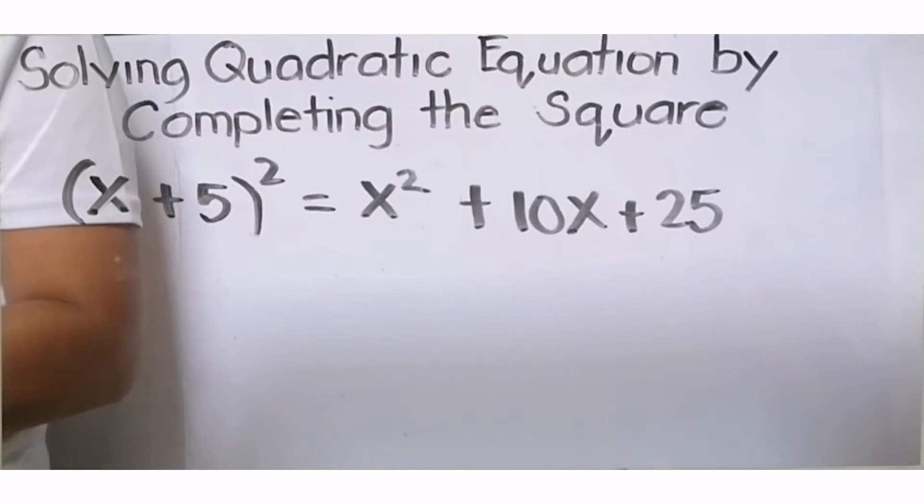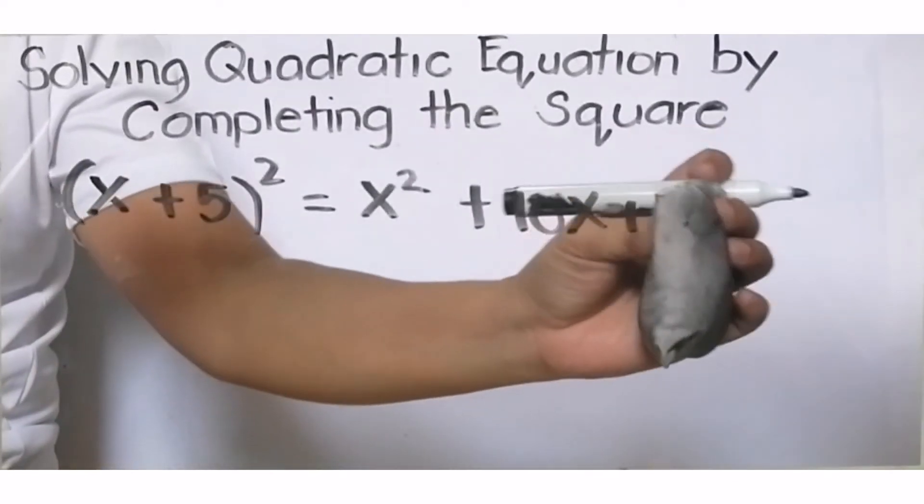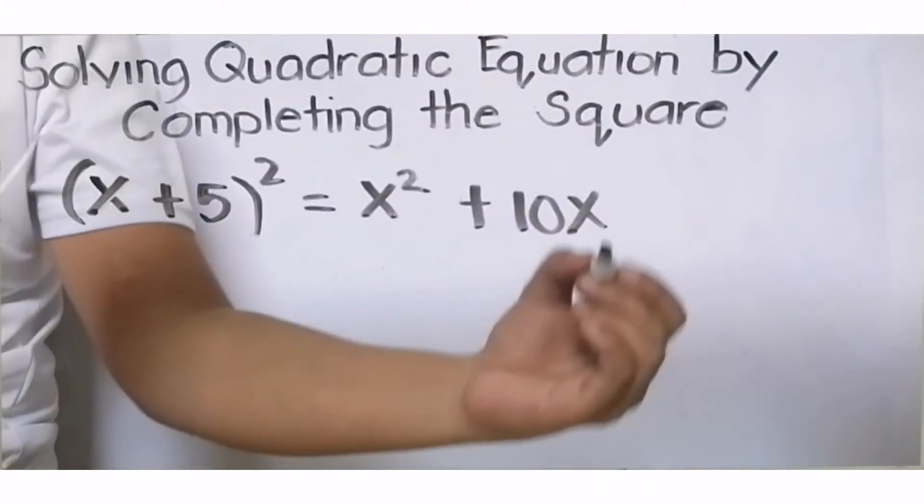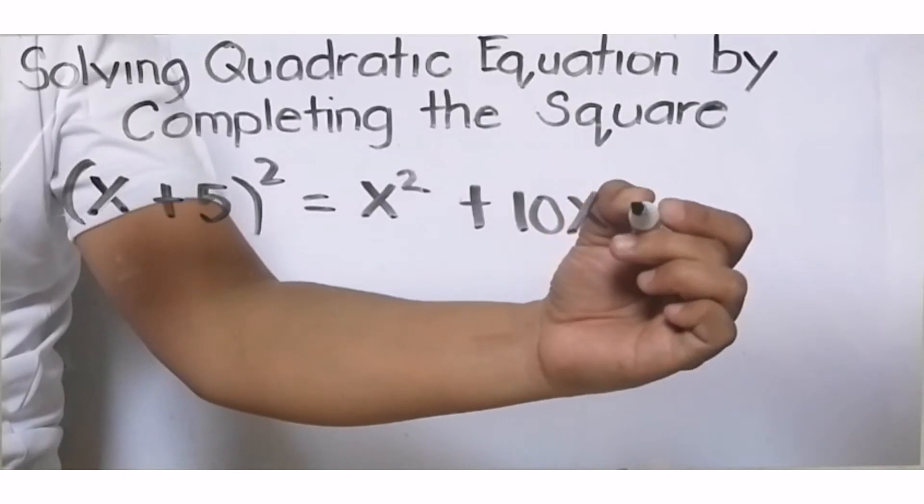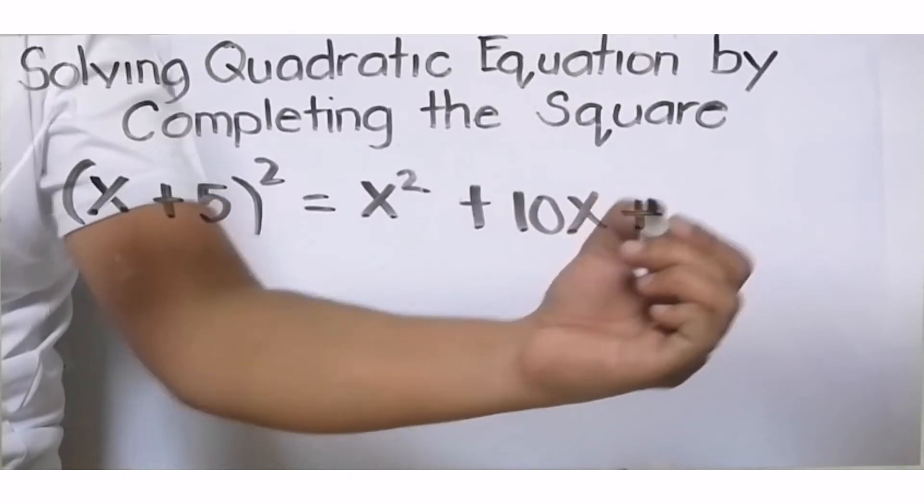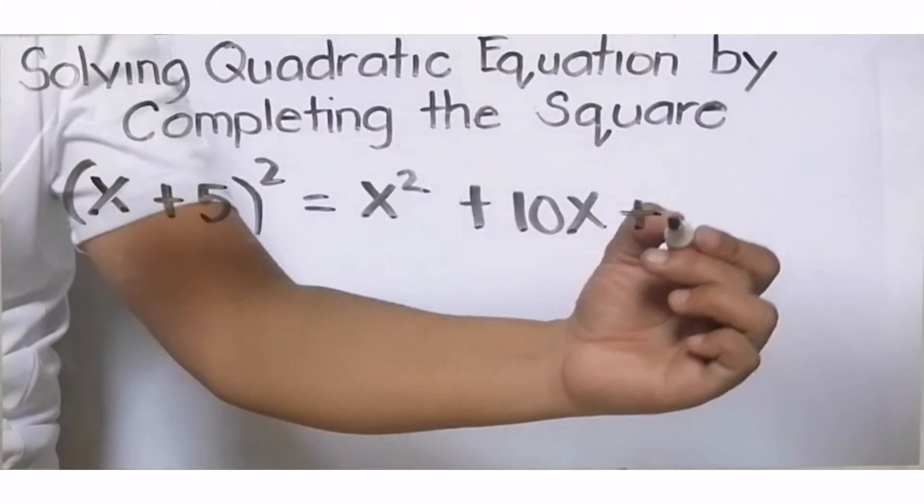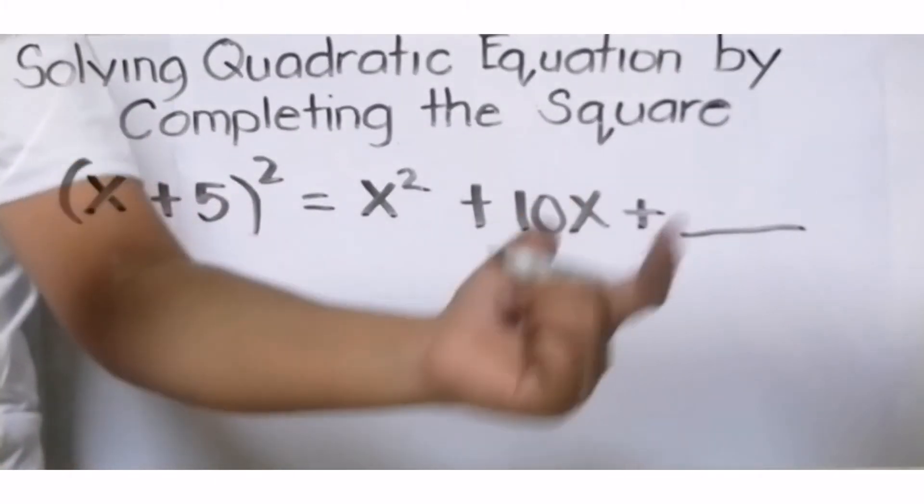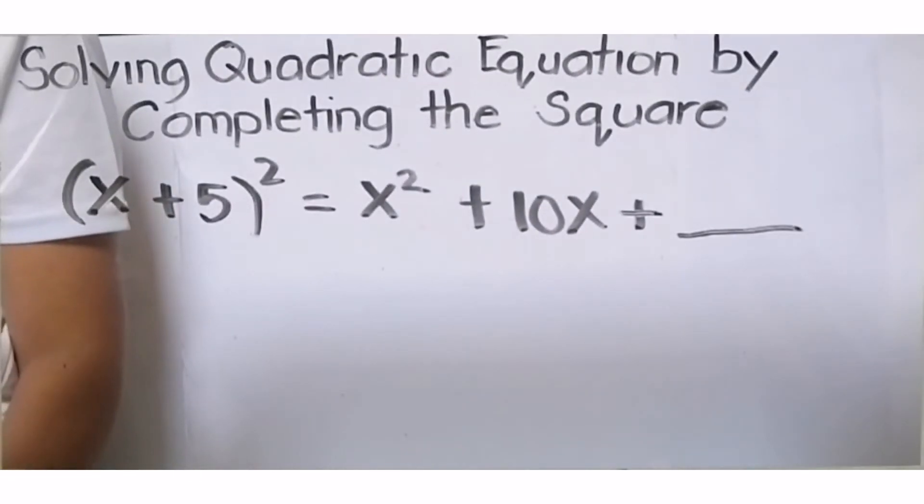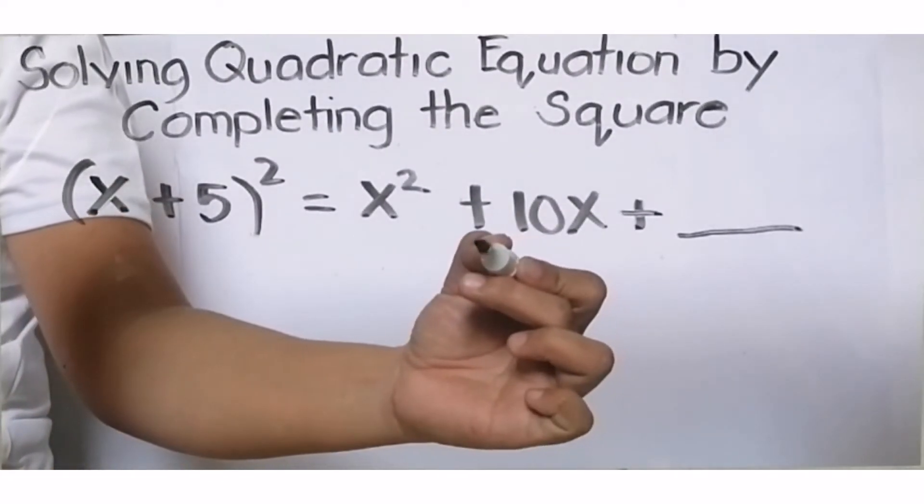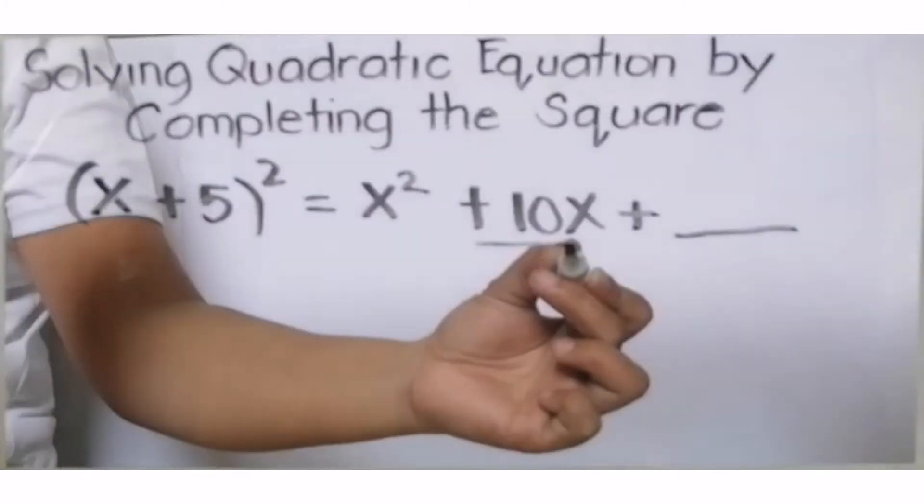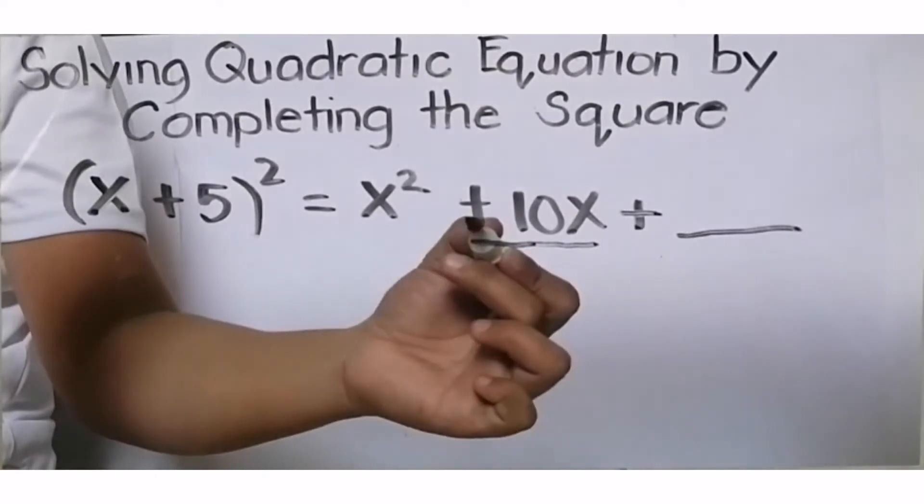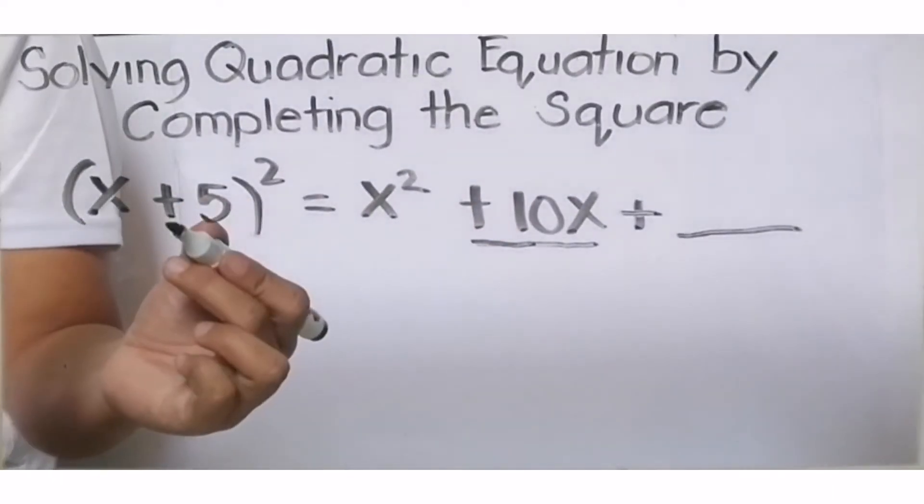Now, what if our last term is missing? Take note, since we're talking about squares, the last term is always positive. Let's say this is missing. How do we find our last term?